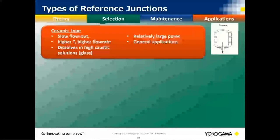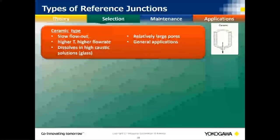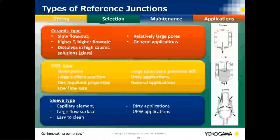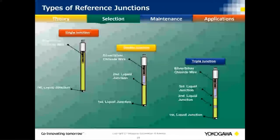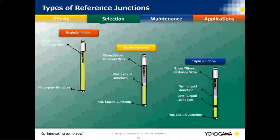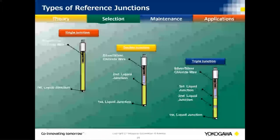Junction selection matters as discussed in pH. Manufacturers offer ceramic, Teflon, and sleeve junctions. For general purpose or batch neutralization ORP, you can usually use Teflon or ceramic. For really dirty applications or ultra-pure water, you'll want a sleeve-type junction to get the longest life out of your electrodes.